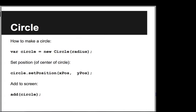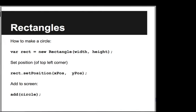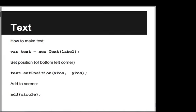As a review: for a circle, we say var circle = new Circle(radius) and call circle.setPosition(x, y), then add it to the screen. For a rectangle, we construct it with the width and height, call rect.setPosition(x, y) for the top left corner, then add it to the screen. For text, we say var text = new Text('label'), set the position of the bottom left corner using text.setPosition(x, y), then add it to the screen.